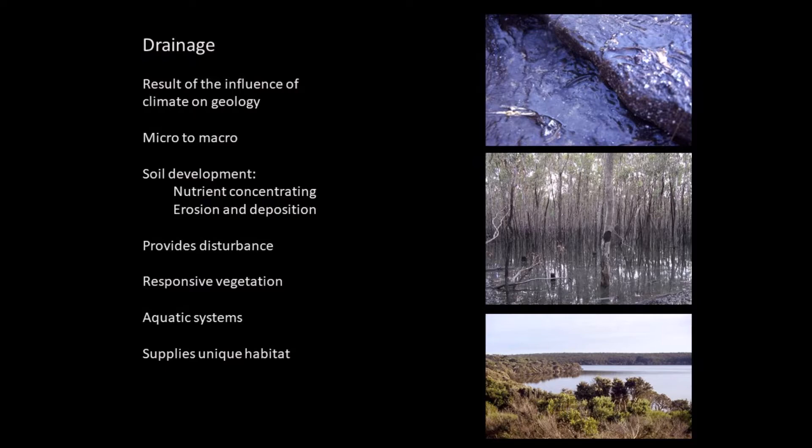The middle picture is Pablup Swamp after floods receded from 1993 — a very wet year. You can see the line in the middle where the flood level was, taken in early 1995, so about 18 months later. The bottom picture is Wellstead Estuary showing the fringing vegetation of paperbark.